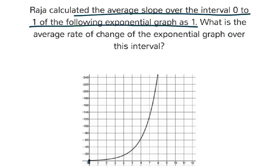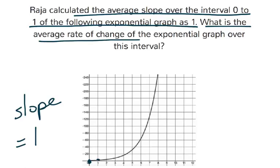So from this point here, 0 to 1, they said the slope here, average slope, was 1. And they want to know what is the average rate of change of the exponential graph over this interval.